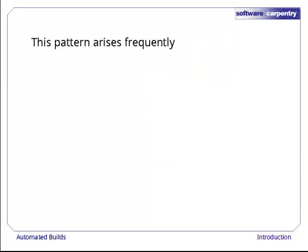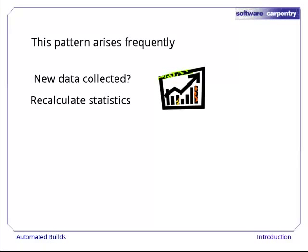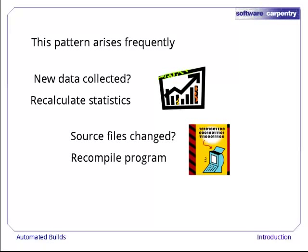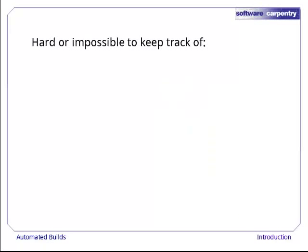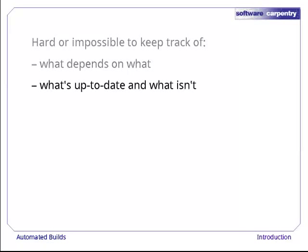This pattern arises over and over again. Each time we collect new data, we need to recalculate our summary statistics. Each time our source files change, we need to recompile our program — if we're using a compiled language like Java, C++, or Fortran. And when someone writes a new paper or receives an award, we need to update our research group's website. If there are more than a dozen or so tasks, it can be hard or impossible to manually keep track of what depends on what, and what is up to date and what isn't — i.e. what's been done and what still needs to be done.